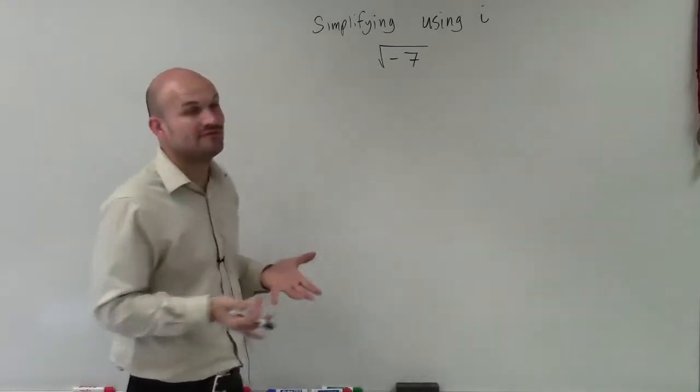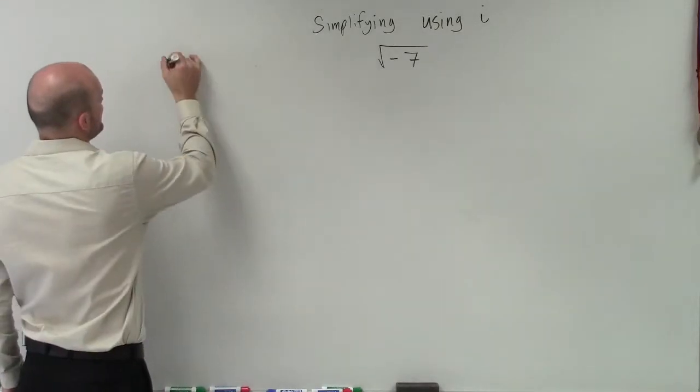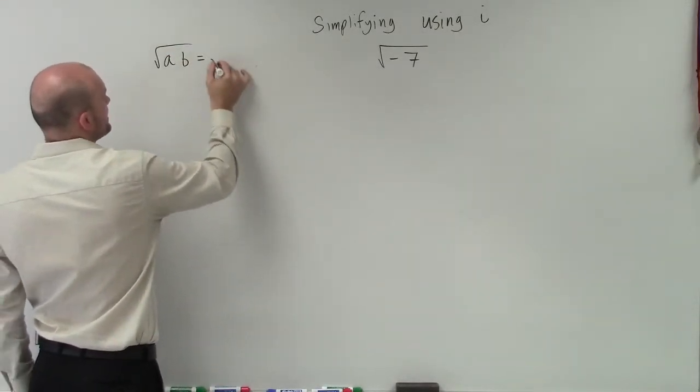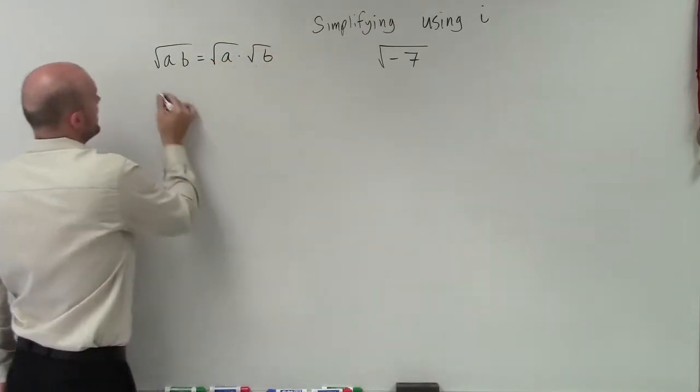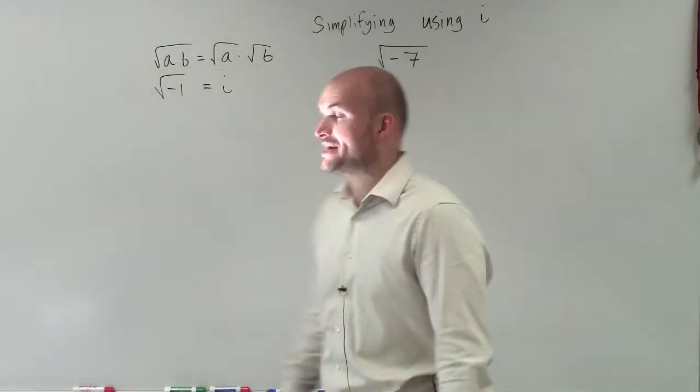What I have here is I want to simplify this number by using i. Remember that the root of a product can be rewritten as the square root of a times the square root of b. Also remember that the square root of negative 1 equals i, our imaginary unit.